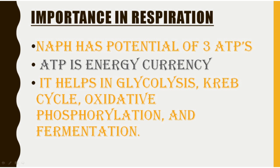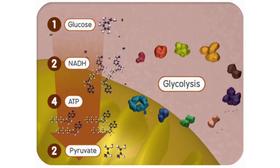Now let's see what happens during glycolysis, which is the first step of respiration. Do not worry about glycolysis or any of the steps of respiration — upcoming videos will cover the steps of respiration in detail. In order to clear concepts about NADH and respiration, it is important to highlight a few steps involved in glycolysis, oxidative phosphorylation, or the Krebs cycle that directly or indirectly use NADH or NAD+. During glycolysis, the glucose molecule is converted into pyruvate, and this conversion releases NADH and ATP. Glycolysis is mainly divided into three steps: the energy investment phase, the sugar cleavage phase, and the energy yielding phase.